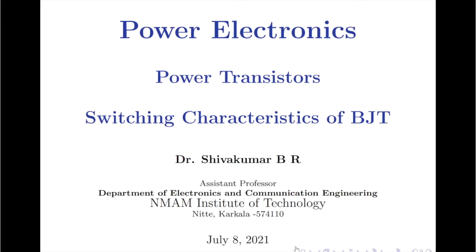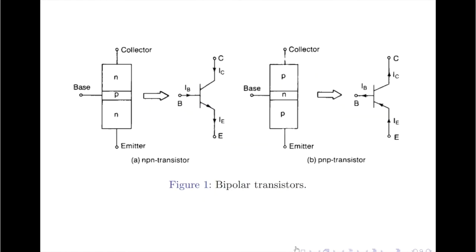Hello everyone, welcome to Power Electronics Tutorials. In this session I will be discussing the switching characteristics of a BJT. We know that a PN junction can act as a parallel plate capacitor. A BJT has two PN junctions: one between the emitter and base, and the other between base and collector. When a BJT is used as a switch, both junctions are forward biased, while in reverse bias these junctions are reverse biased.